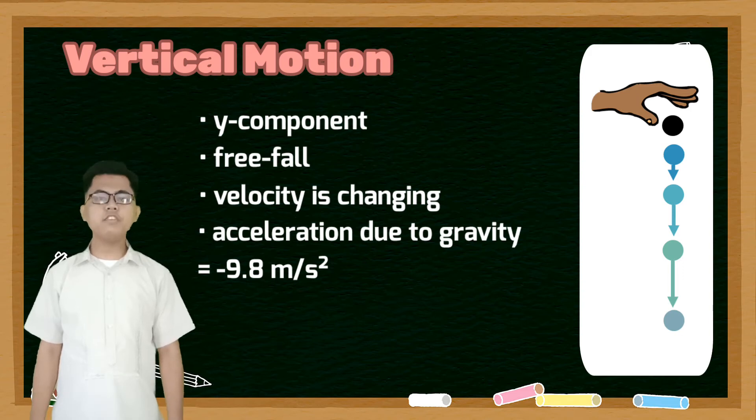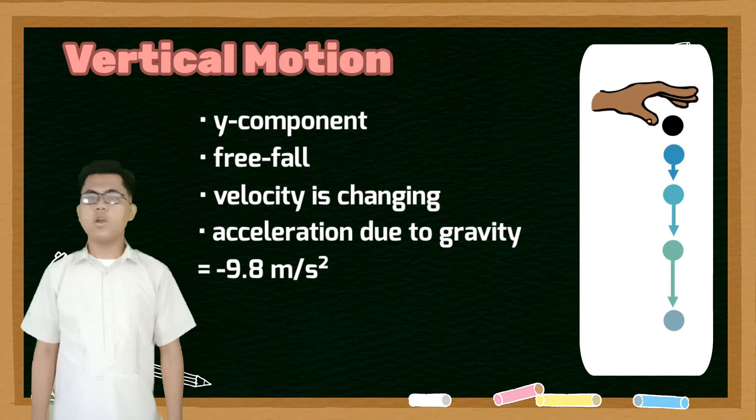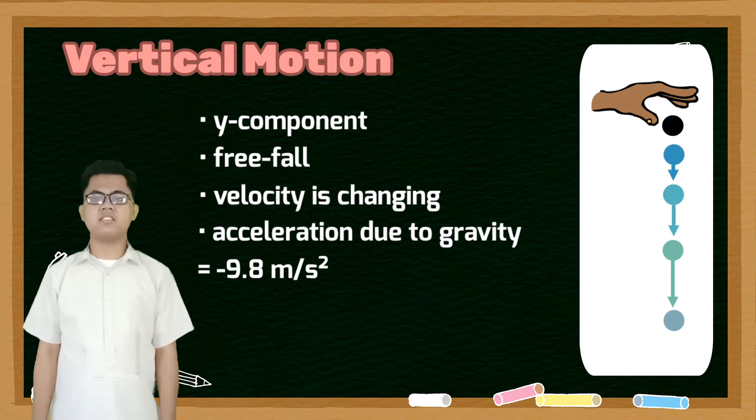The acceleration due to gravity is equal to negative 9.8 meters per second squared. Or we can say that the ball is moving 9.8 meters per second every second.